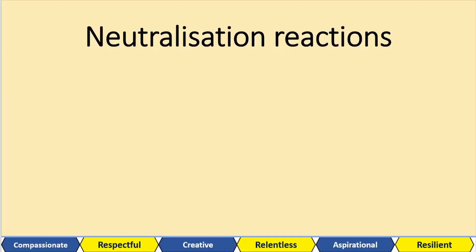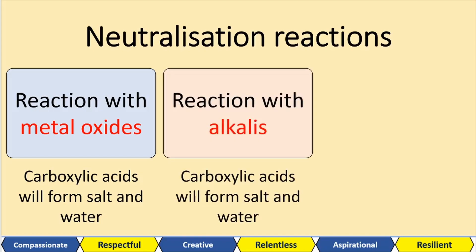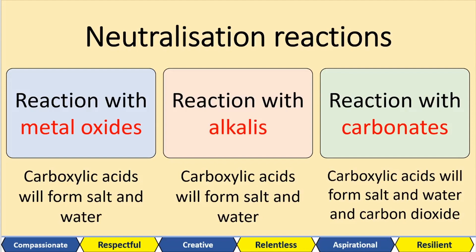When looking at neutralization reactions — reactions with metal oxides — the carboxylic acid forms salt and water. When reacting with alkalis, the carboxylic acid again forms a salt and water. But when reacting with carbonates, the carboxylic acid forms a salt, water, and also carbon dioxide. So with a metal we form salt and hydrogen gas; with a metal oxide or alkalis, salt and water; with a carbonate, we also form carbon dioxide.